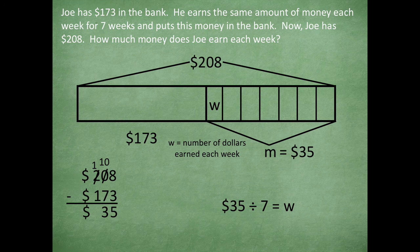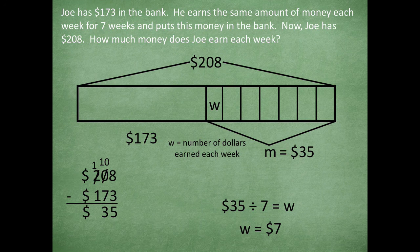As I counted that, I counted seven five times. So seven times five is 35, or 35 divided by seven is five. So W equals five. He earned $5 each week.